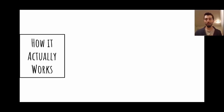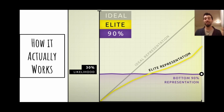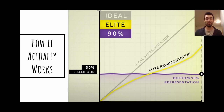Now we talk about how the system actually works — who are U.S. government representatives representing? This graph has on the x-axis the percentage of support any given idea, bill, or law has, and on the y-axis the likelihood that it will pass. That purple line represents a 30% likelihood that any given idea will pass no matter what percentage of support it has among the poorest 90% of the population. The yellow line represents the likelihood a bill will pass based on support among the wealthiest 10%. The wealthiest 10% enjoy an almost ideal representation in government, while the poorest 90% basically have no representation at all.